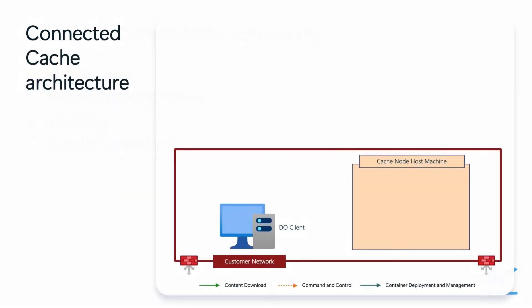So to start, let's walk through how Connected Cache works at a high level. On screen, you'll see your enterprise network indicated by the red line. Inside your network, you'll have two machines. On the left is your enterprise managed Windows device, which uses the delivery optimization client to request Microsoft content. On the right is the host machine that you want to deploy your Connected Cache node to. This can be a server or a desktop or a VM running Windows 11, Windows Server 2022, Ubuntu 22.04, or Red Hat Enterprise Linux 8 or 9.